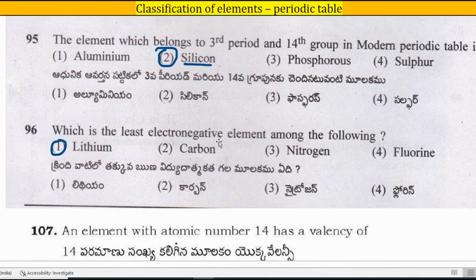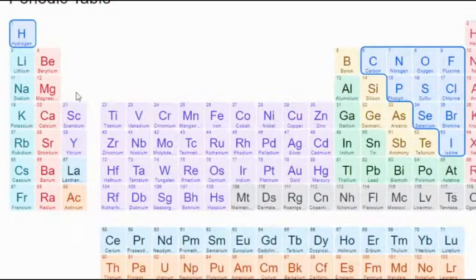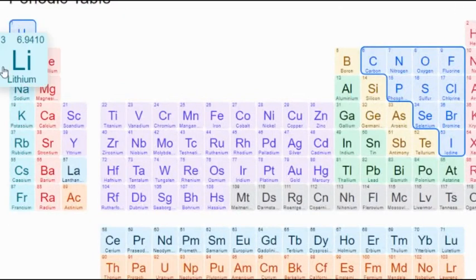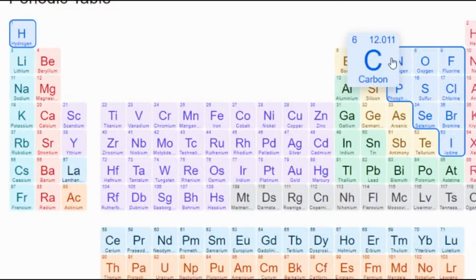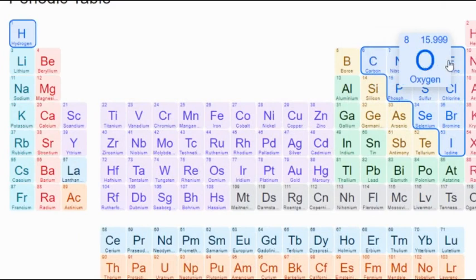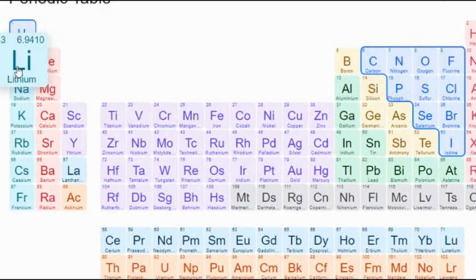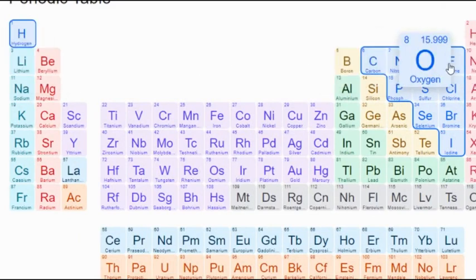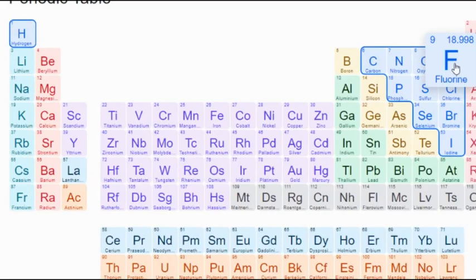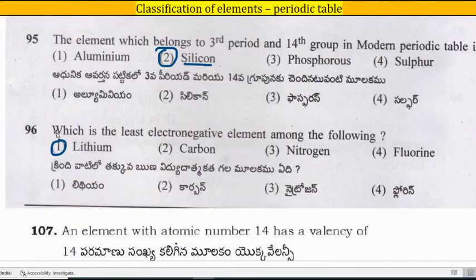Question: Which is the least electronegative element among lithium, carbon, nitrogen, and fluorine? Electronegativity increases from left to right. Lithium has the least electronegativity and fluorine has the highest electronegativity. So the correct answer is lithium.